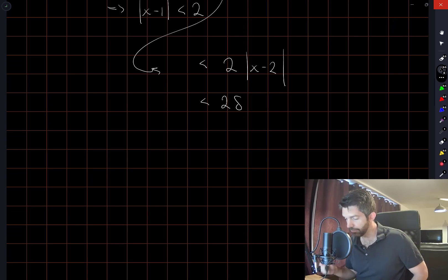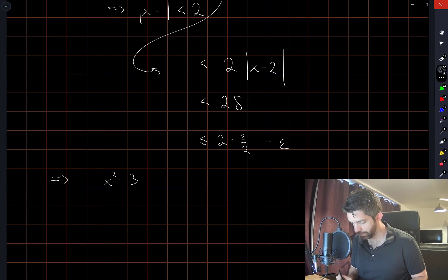But we also have, because delta is equal to the minimum of 1 and epsilon over 2, delta is less than or equal to epsilon over 2. So putting all of this together, we have that x squared minus 3x plus 2 is less than epsilon.